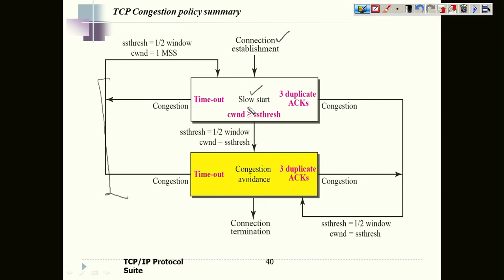In the slow start, which is the initial phase also called exponential increase, we keep on increasing the number of segments depending on the number of acknowledgements received. If you are sending two segments and you receive two acknowledgements, then the next time you will deliver four segments. This increasing happens only up to the threshold value, called the slow start threshold, which is half of the receiver window size. Once you reach this threshold value, you move to the second stage — additive increase.